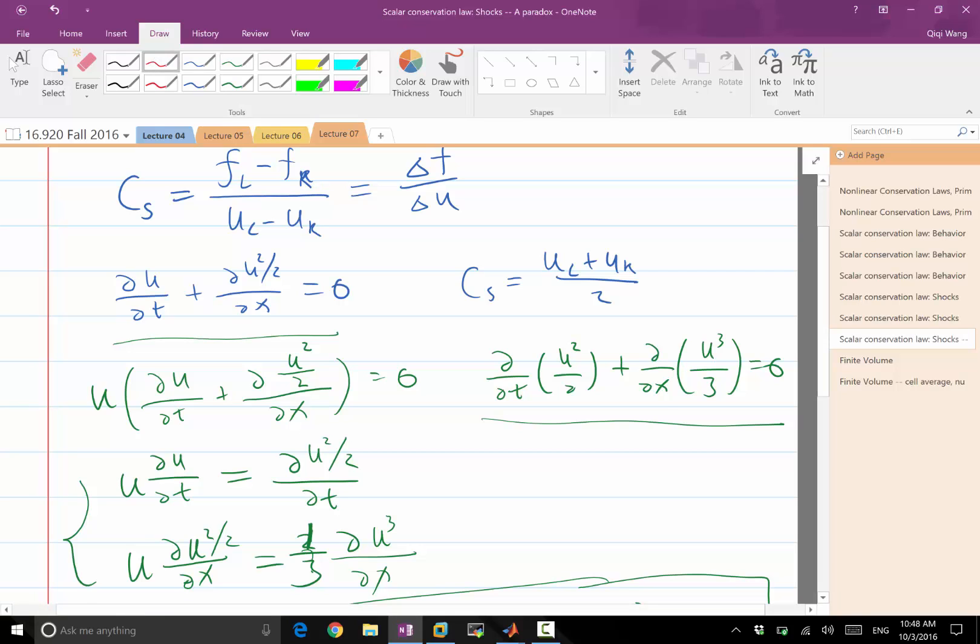For that conservation law, let's denote V equal to half of U². Then f of V is U³ over 3, which equals 2V to the 3/2 power divided by 3.